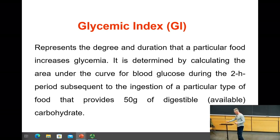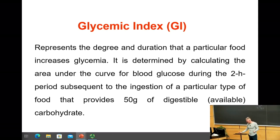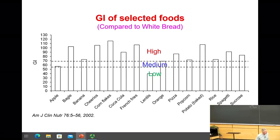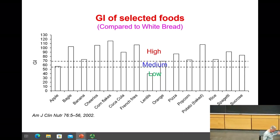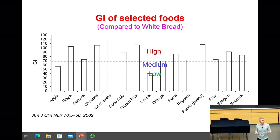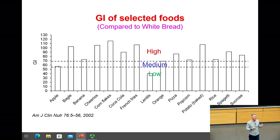This has been measured for thousands of different foods already — it's time consuming, but it's been done many times. Here are some common foods that people usually eat, to give us an idea of what the glycemic index is, or what the response of your body is to these foods.